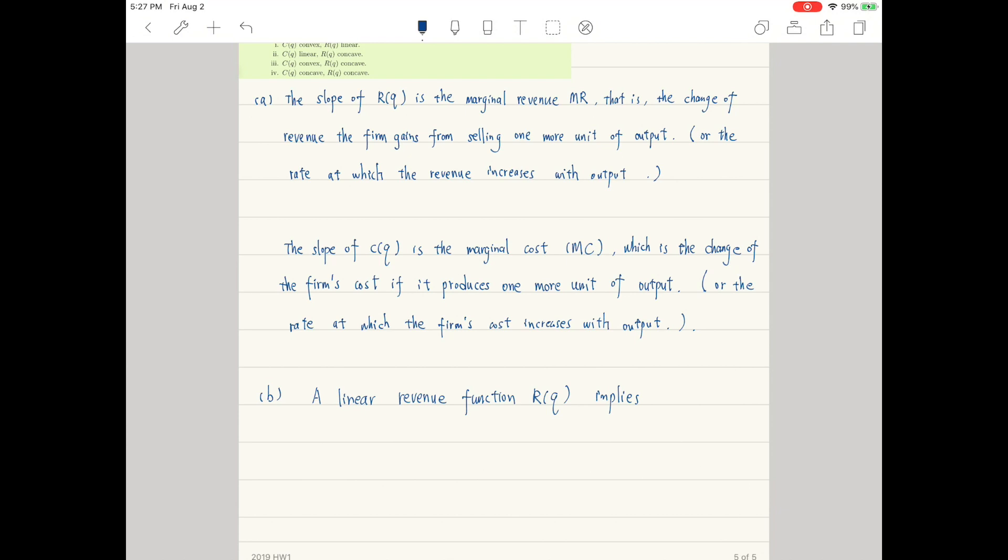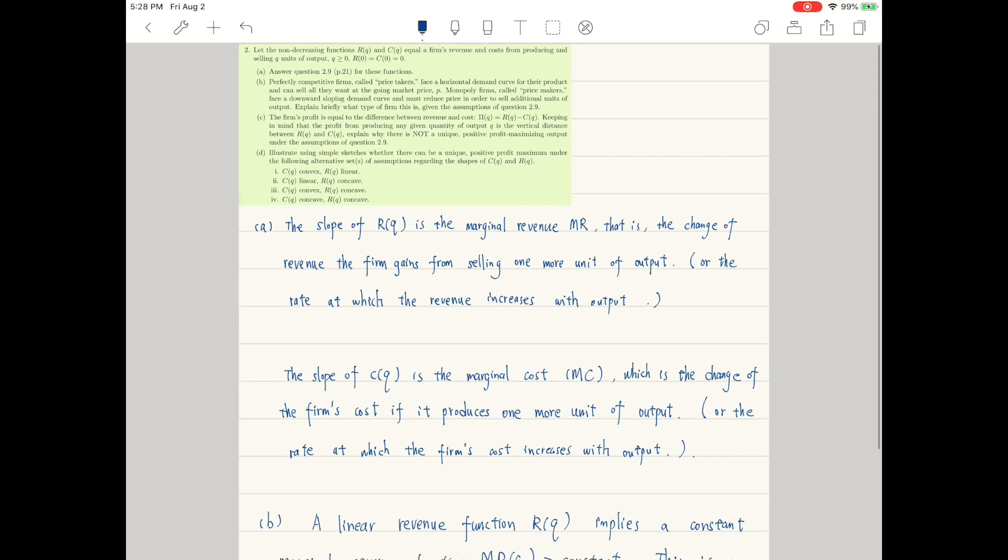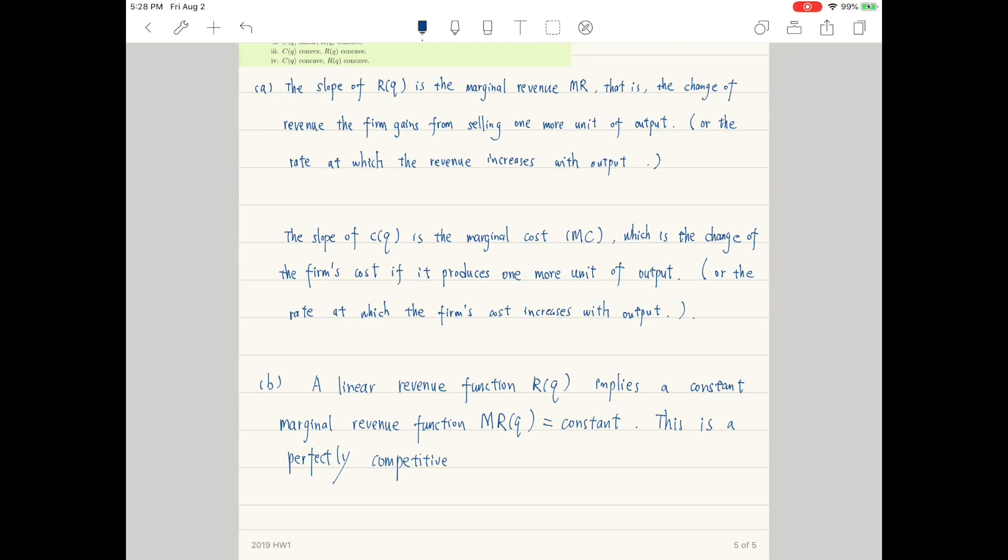For part b, a linear revenue function implies a constant marginal revenue function, and we know that the marginal revenue of a perfectly competitive firm or a price taker is equal to the going market price, which is a constant, while a monopoly firm's marginal revenue curve is downward sloping. So this is a perfectly competitive firm or a price taker.